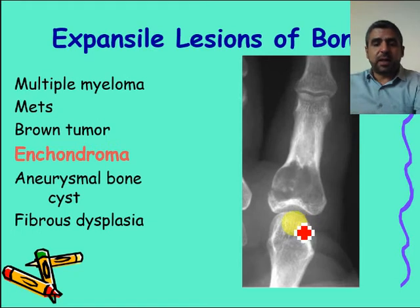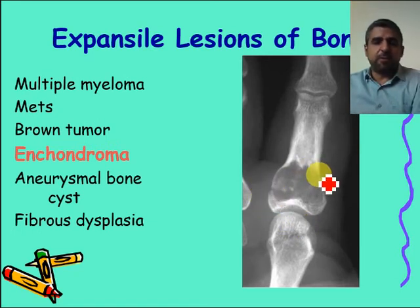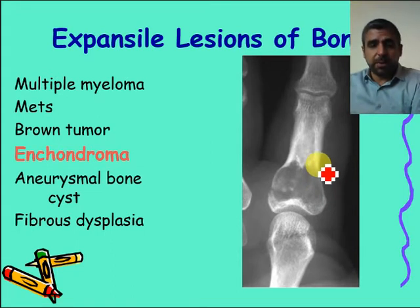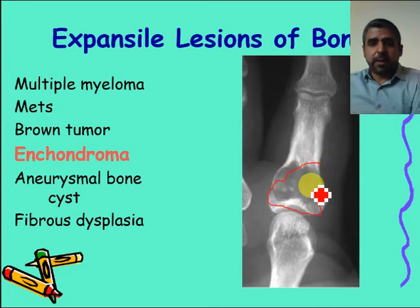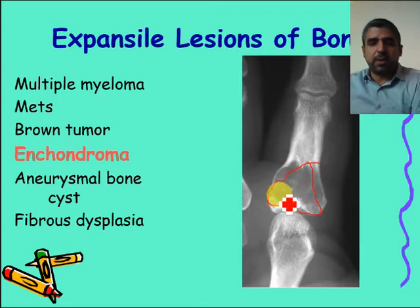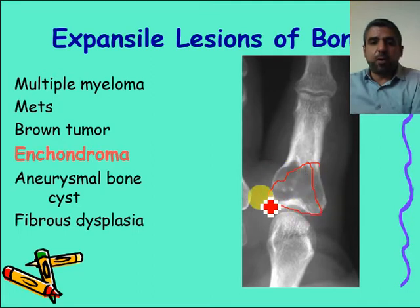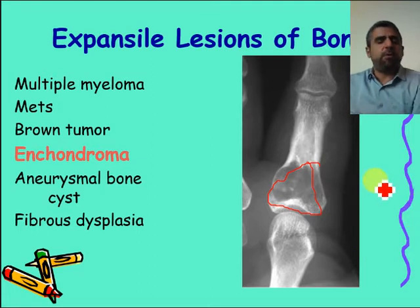Enchondromas are quite common in daily practice — benign lesions with no malignant potential. You can see it is medullary, well-defined, and well-circumscribed. There is a comma-shaped kind of calcification within the tumor matrix. It is expansile, changing the shape of the bone — all findings characteristic of enchondroma.